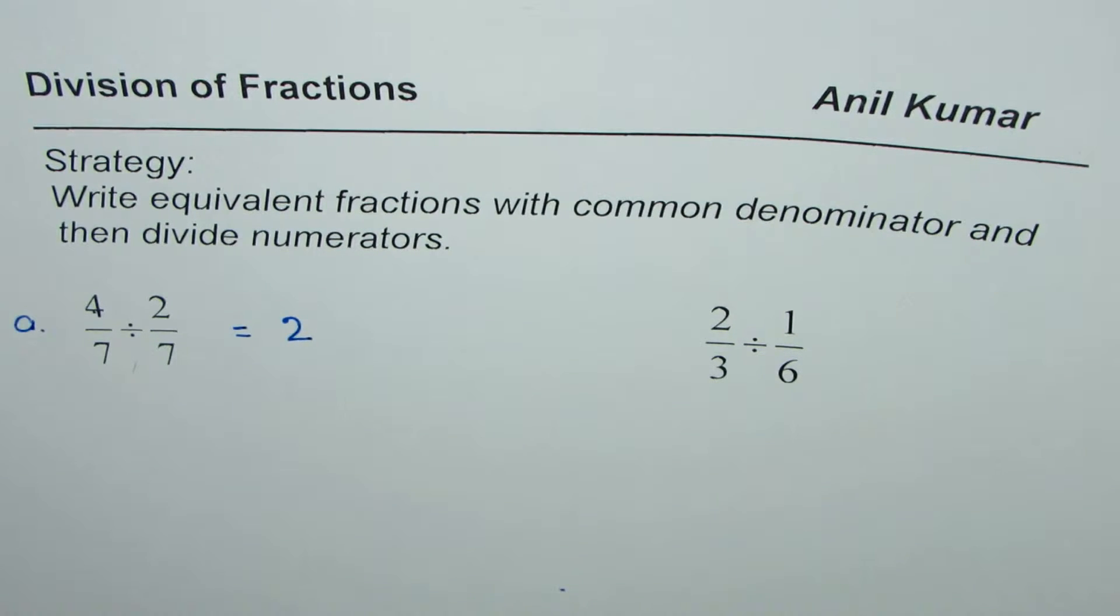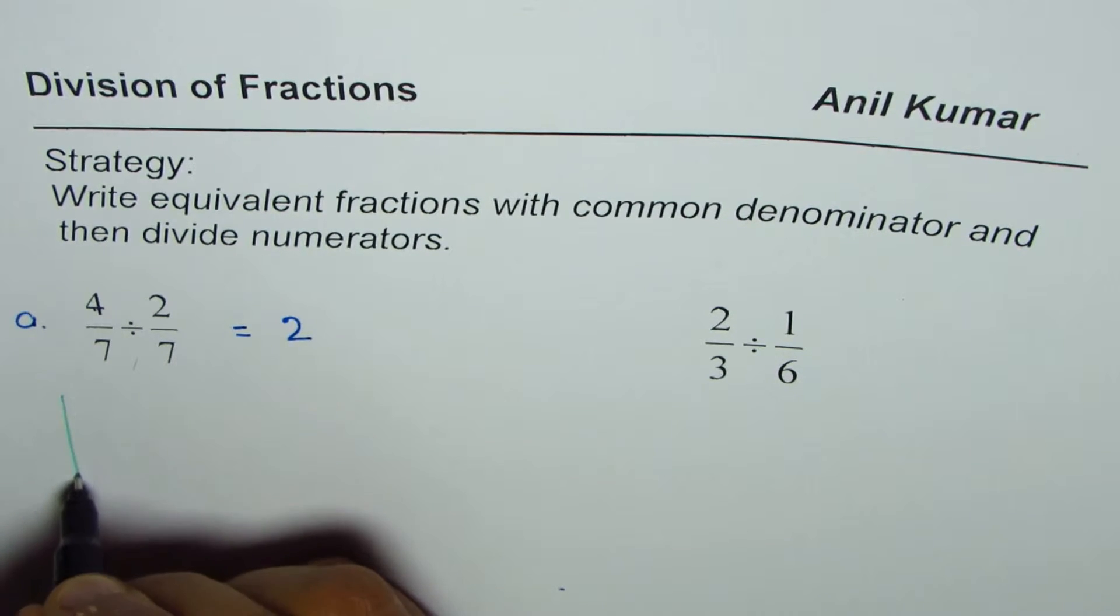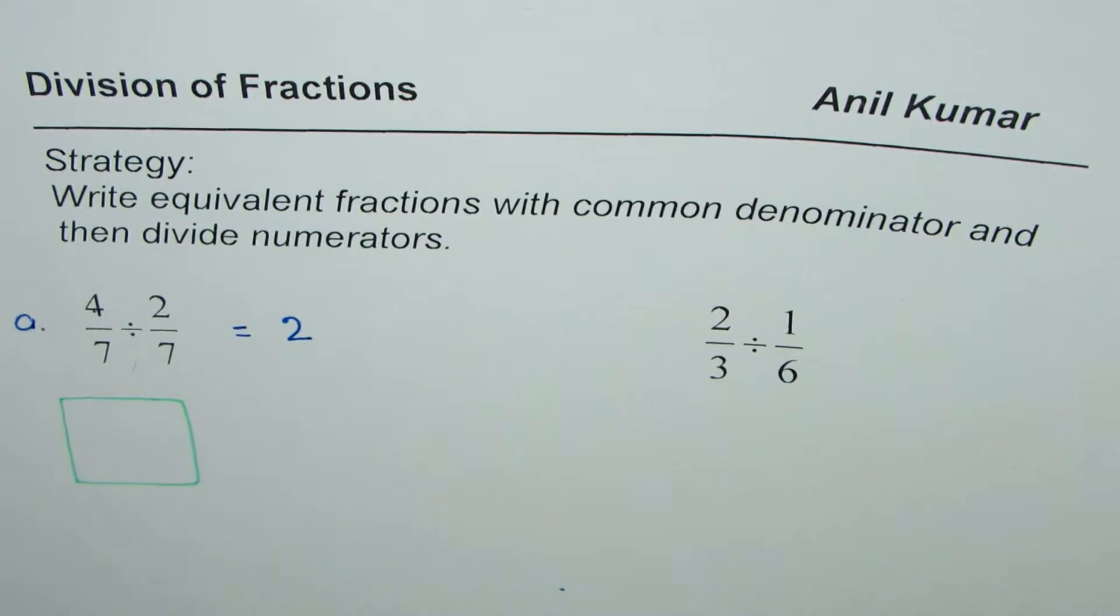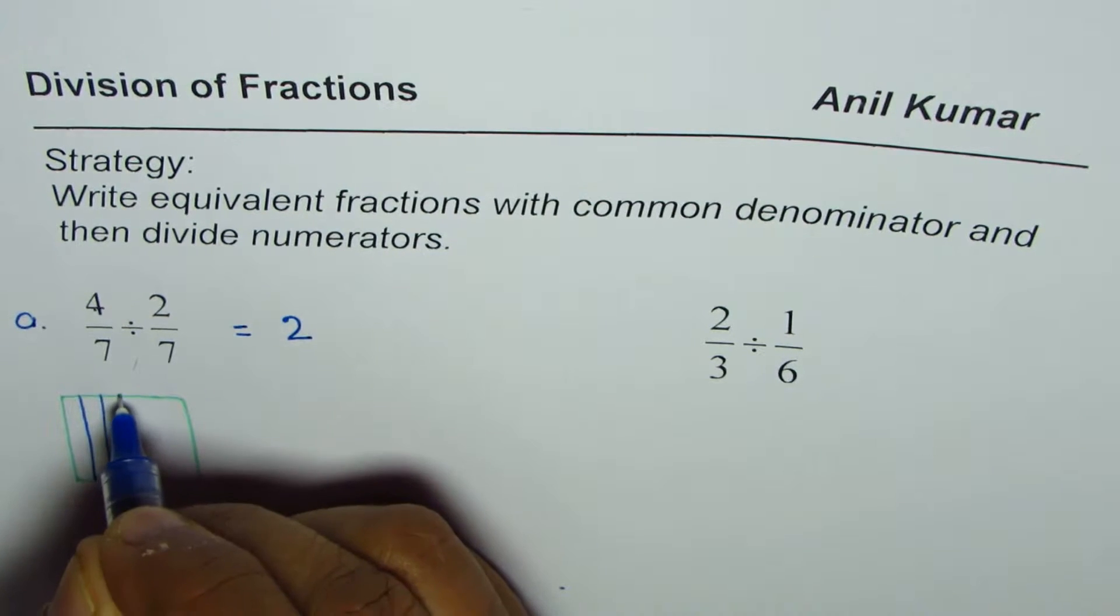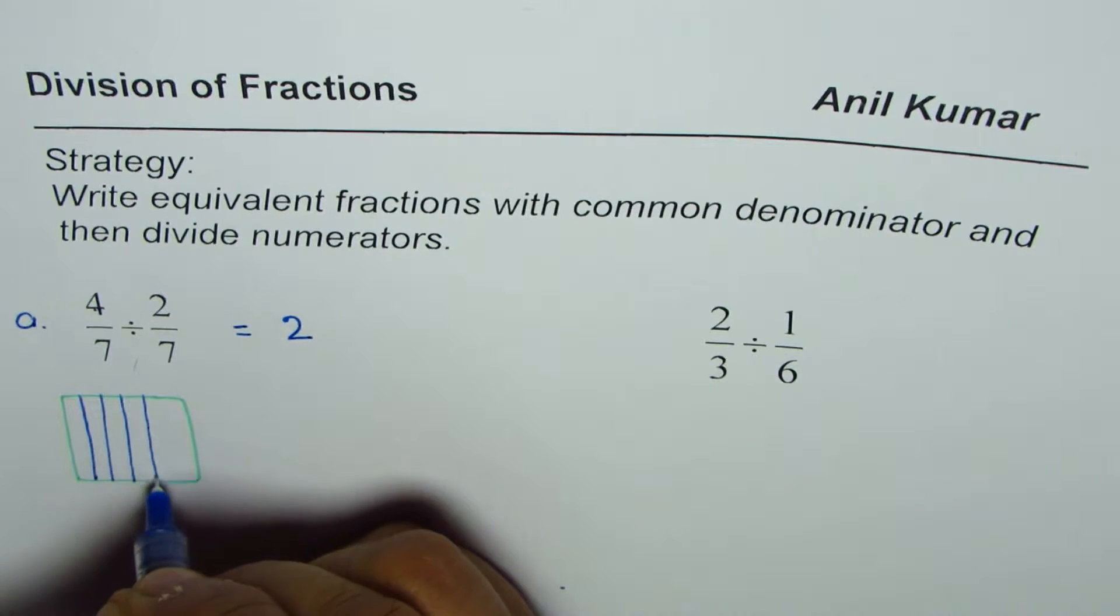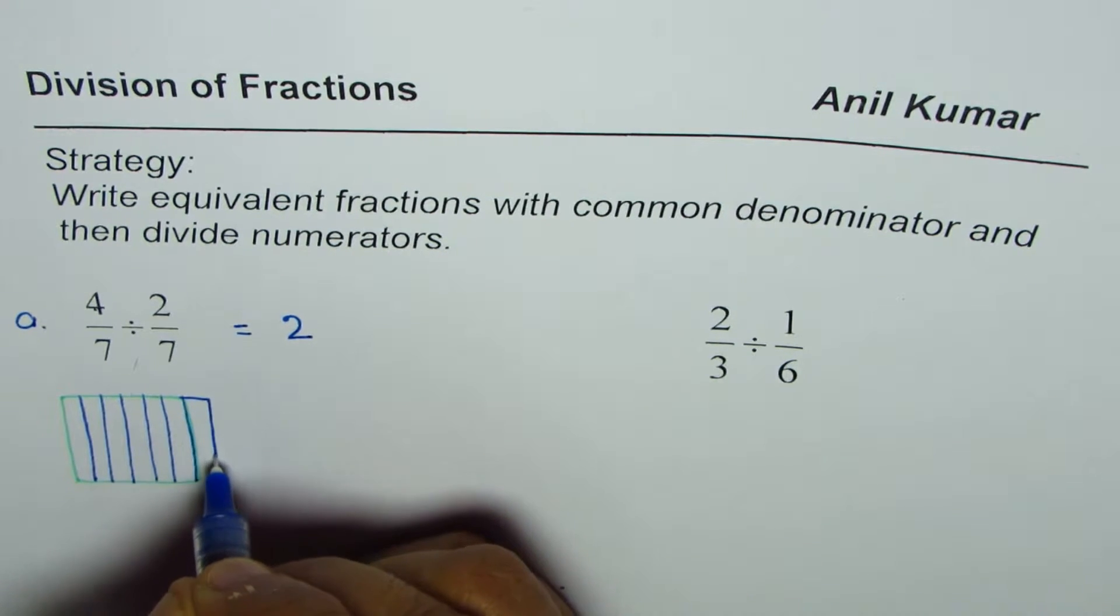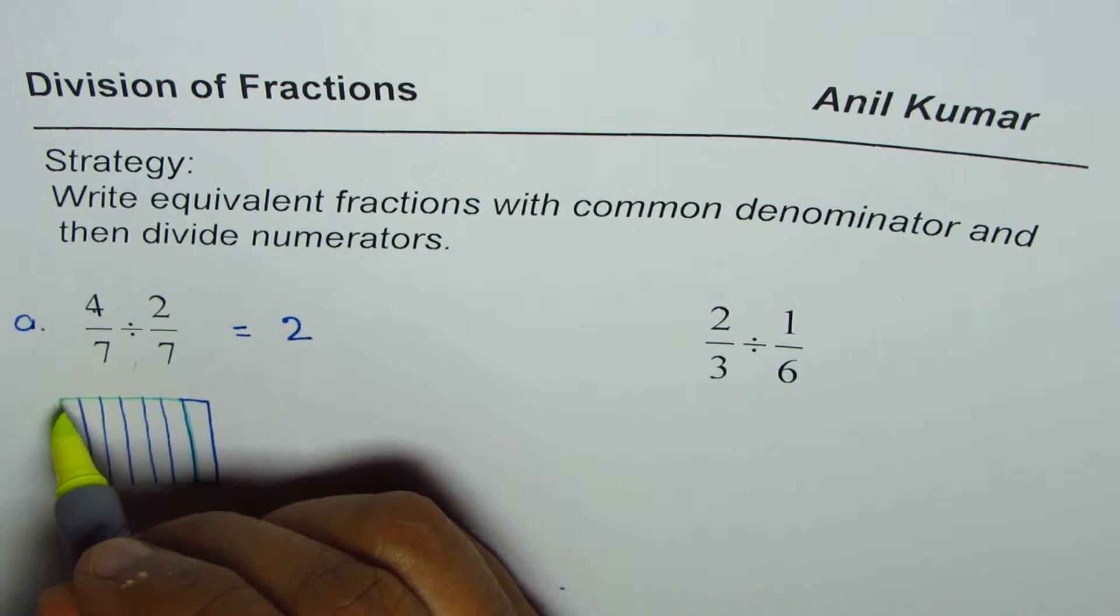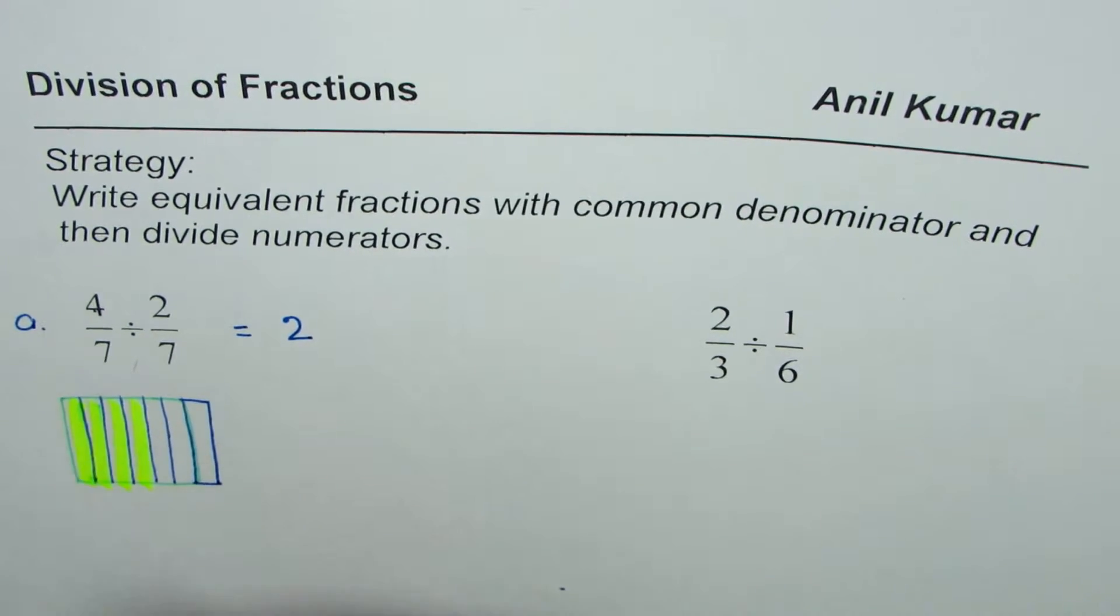The concept here is that 4 over 7 is - let's say we have a box here and divide it into 7 equal parts: 1, 2, 3, 4, 5, 6, and one more. So seven equal parts. And then select four of them. So we have selected 4: 1, 2, 3, and 4.